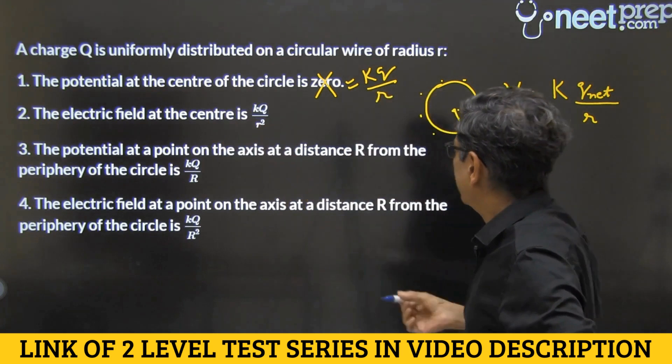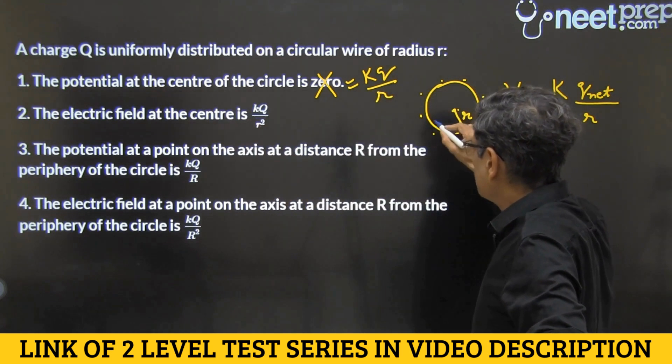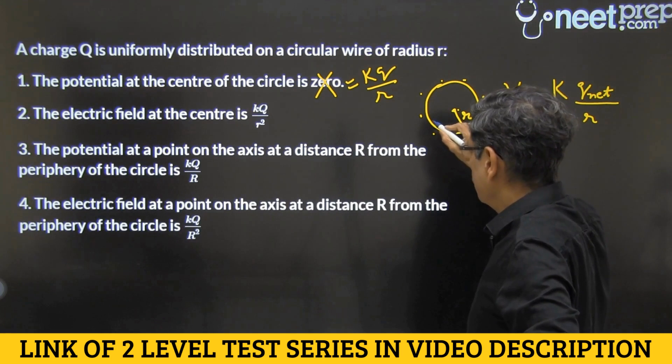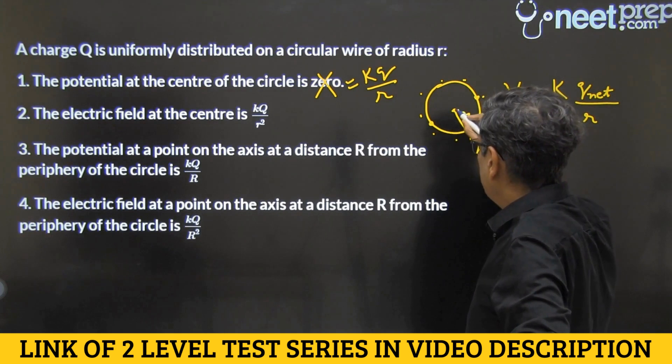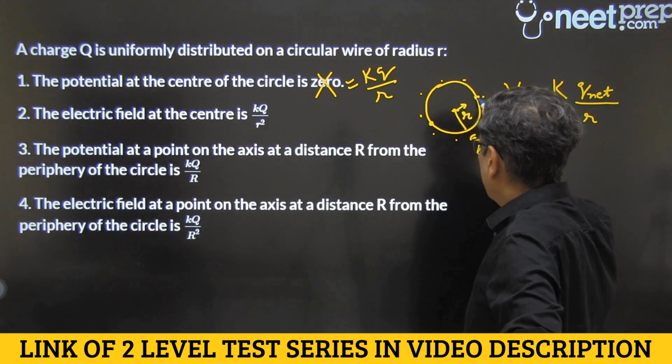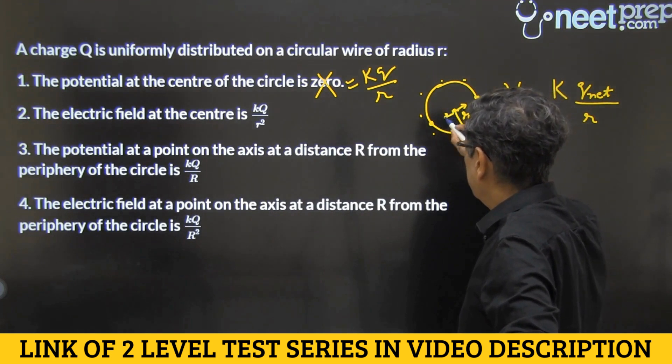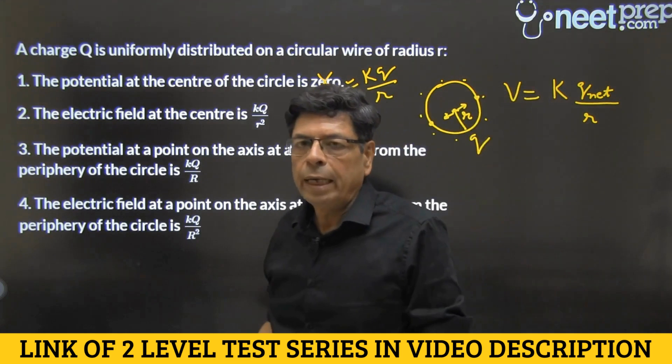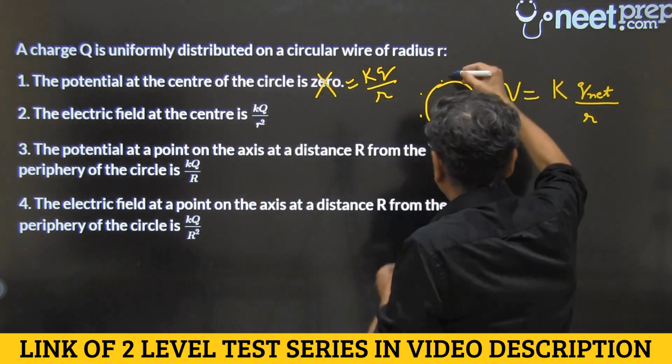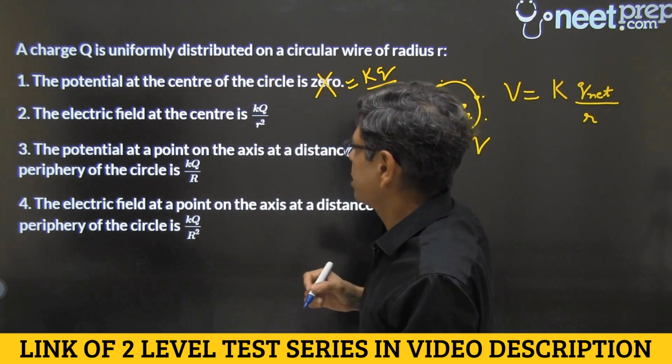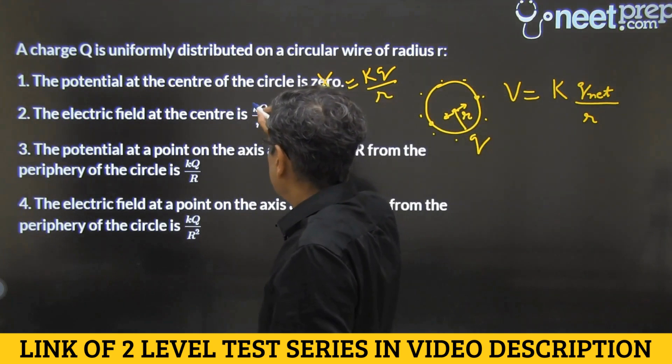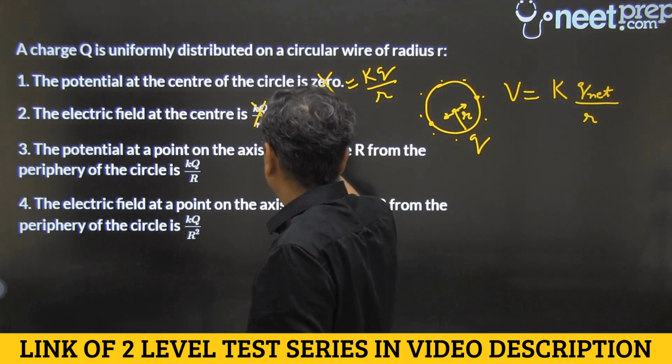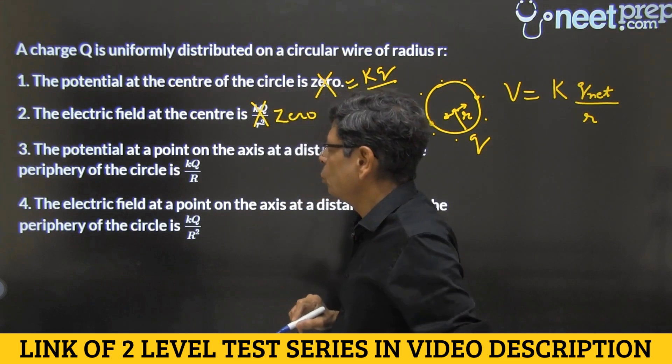Electric field at the center is KQ by R square. Well, sorry, electric field at the center is zero because if there is a charge here, there is as much charge here, and the field due to one charge and the other charge, they clash out and cancel out to zero. So all diametrically opposite charges supply fields which cancel out, and overall field would be zero. This is wrong. Field would be zero. Electric field at the center would be zero. So option two is also gone.